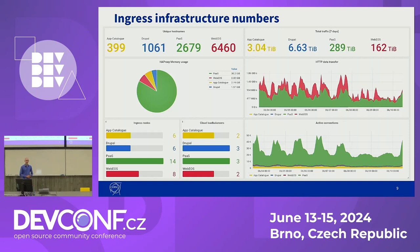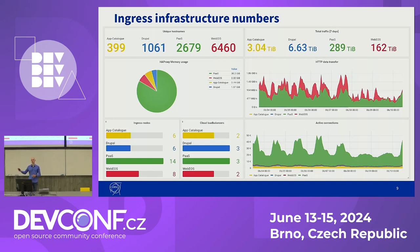Now for some numbers about this infrastructure, we're hosting somewhere around 8,000 unique host names. Depending on the cluster flavor, we see quite varied usage patterns. The app catalog and Drupal clusters, which are more end-user facing websites, have overall lower traffic compared to PaaS and WebEOS, where we have a lot of machine traffic, for example other machines downloading software packages. These numbers are not here to impress or brag because we are aware that we are not Cloudflare or Google or Facebook, but it just shows what can be done with standard off-the-shelf software on-premises.